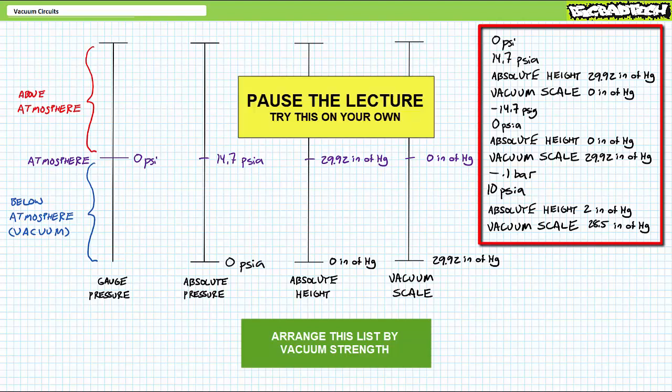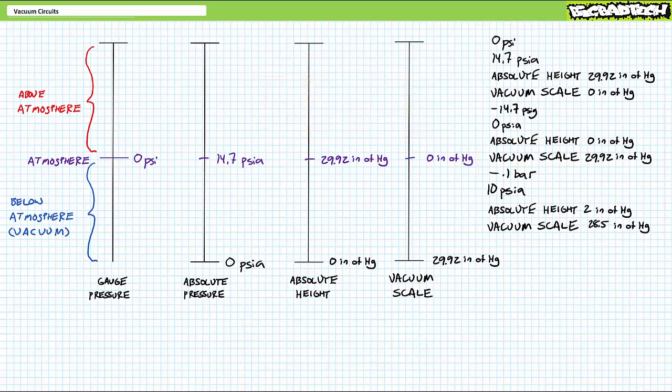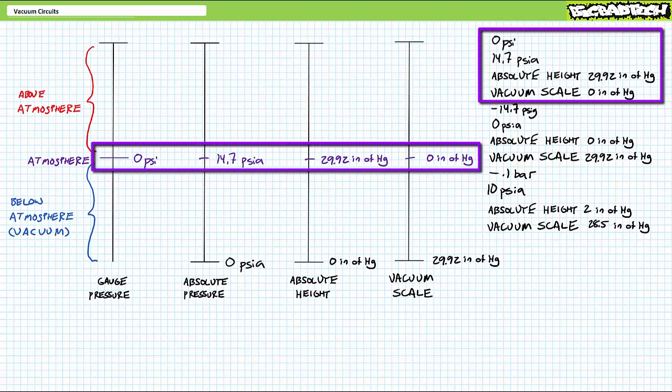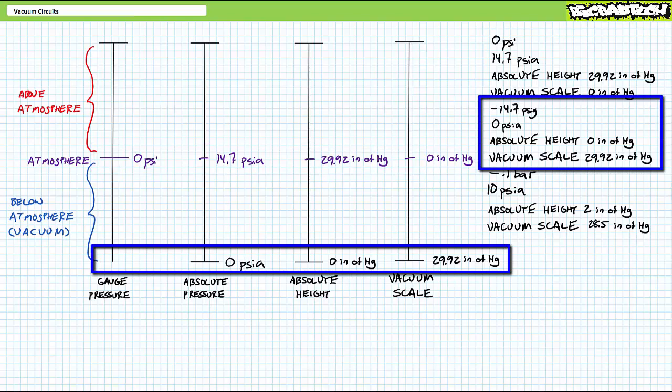If you're tracking, you should obtain the following results. A couple of these should be super easy. The first four measurements all express the same atmospheric, i.e. no vacuum condition. 0 PSI gauge, 14.7 PSI absolute, 30 inches of mercury in the absolute height scale, and 0 inches of mercury in the vacuum scale are all weak, essentially non-existent vacuums. The next four measurements all express the same perfect vacuum condition. Negative 14.7 PSI gauge, 0 PSI absolute, 30 inches of mercury in the absolute height scale, and 0 inches of mercury in the vacuum scale are all super strong, perfect vacuums.